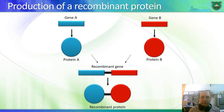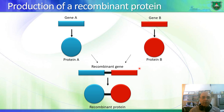To produce a recombinant protein, we use genetic engineering to express two genes together. Both genes are expressed as one continuous messenger RNA from AUG to a single stop codon, and the whole polypeptide is produced at once, forming a recombinant protein.